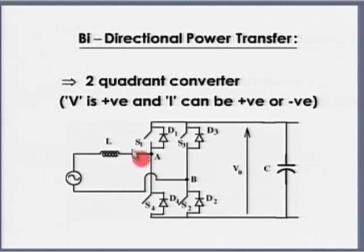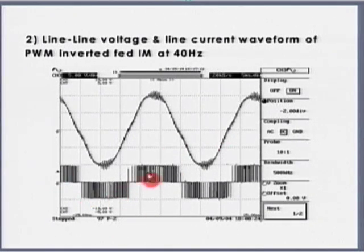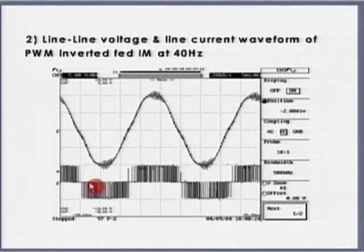The voltage at the inverter output is a pulse-width modulated waveform with a large number of pulses. If the load is highly inductive, I get a sinusoidal current, which implies that the fundamental component is at 50 hertz. If I use an LC filter, I get a purely sinusoidal voltage. For analysis, I will draw only the fundamental equivalent circuit, assuming an LC filter is present (or neglecting higher harmonics).